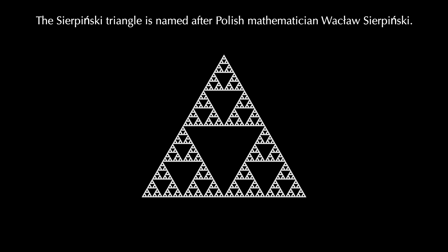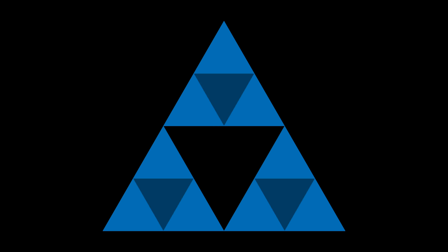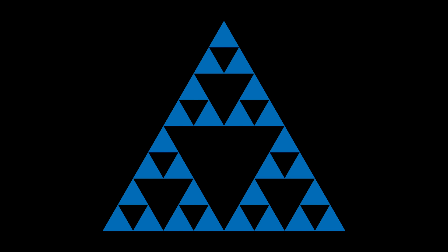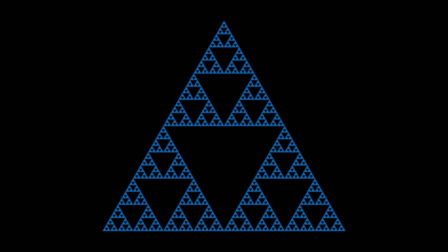Let's explore six mathematical techniques that can be used to build this amazing fractal. For our first method, we start with an equilateral triangle and subdivide it into four congruent equilateral triangles and remove the middle one. Then we repeat this process on the three remaining triangles, then again on the nine remaining triangles, and so on. We can continue this process as many times as we need to get a good approximation of the Sierpinski triangle.